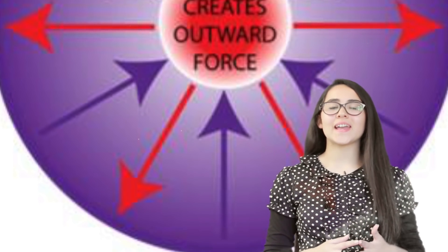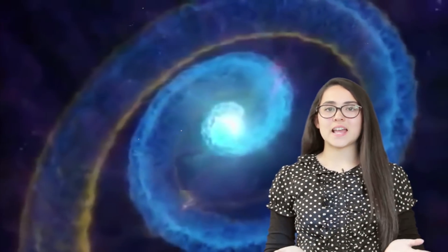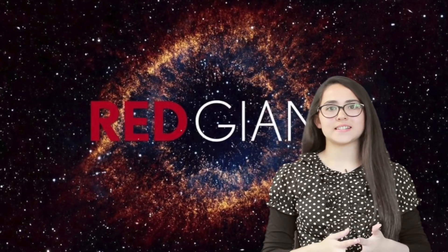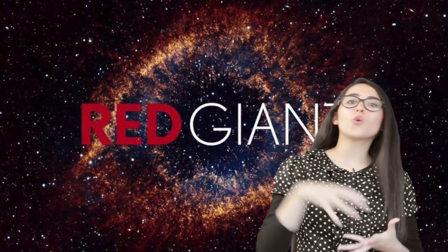The star will remain this way until it runs out of hydrogen. When the hydrogen runs out, the outside of the star expands and it becomes a red giant. Eventually, the core of the star will start to make iron. This will cause the star to collapse.